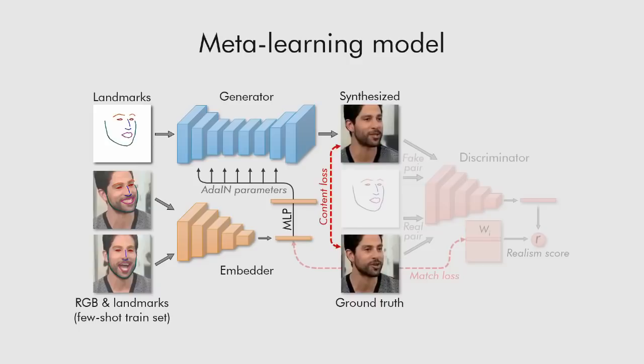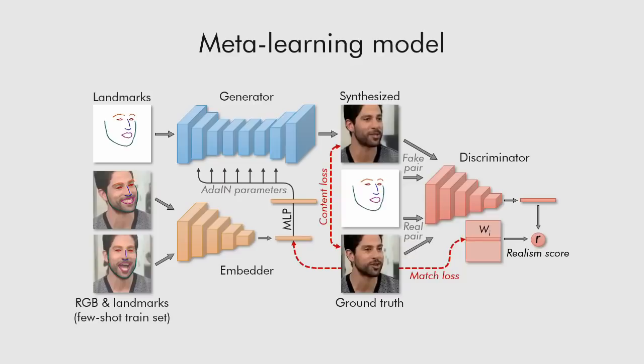The discriminator network assesses the realism, pose, and identity preservation of the generated frames. Better identity preservation is achieved by having a trainable embedding vector inside the discriminator for each training video. For more details, please refer to the paper.